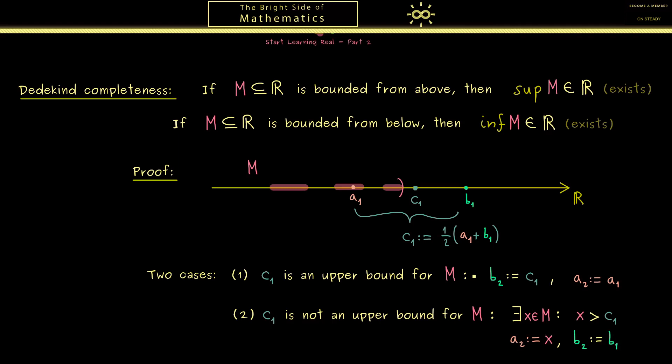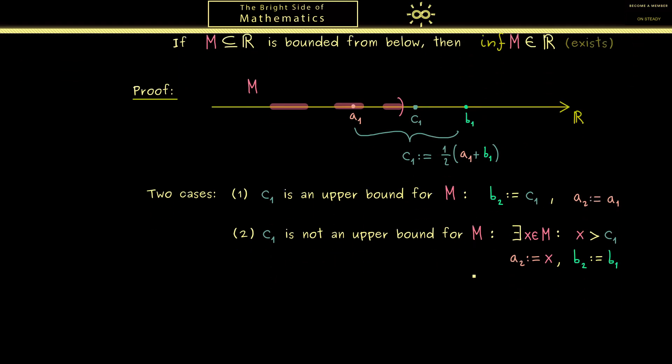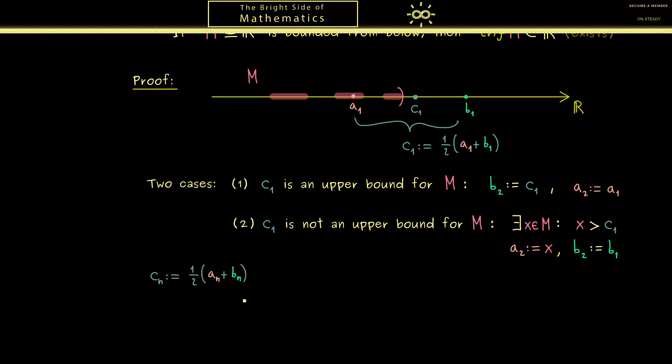Now having this we have the whole procedure how we can form the sequences. So in general when we have a_n b_n we define c_n. And then as before we just define the two next numbers here. So this is a recursive definition which gives us two sequences a_n and b_n. And the sequence members b_n are always upper bounds which approximate the supremum.